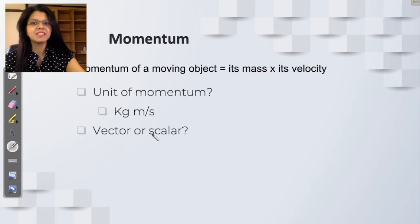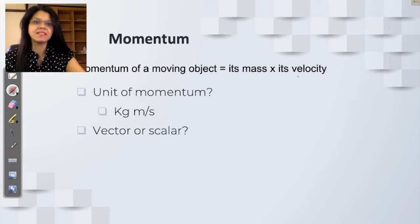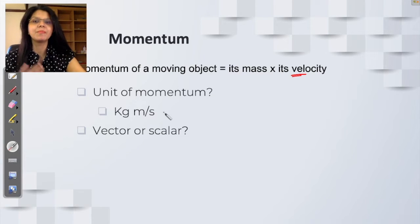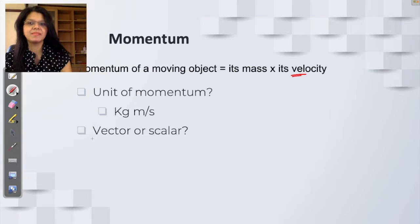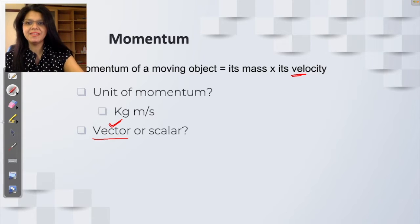Is momentum a vector or a scalar quantity? Look at the formula again: mass times velocity. Velocity is a vector quantity, and because there is a vector in the formula for momentum, momentum itself is also a vector. Again, this is something you need not memorize — it comes directly from the formula.